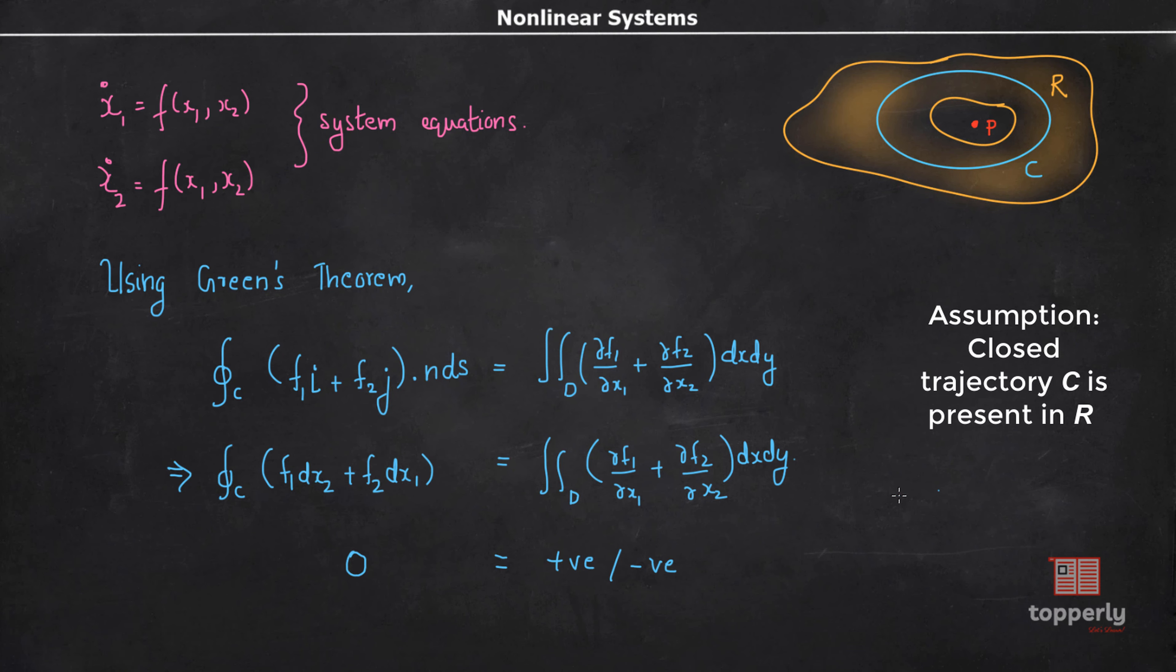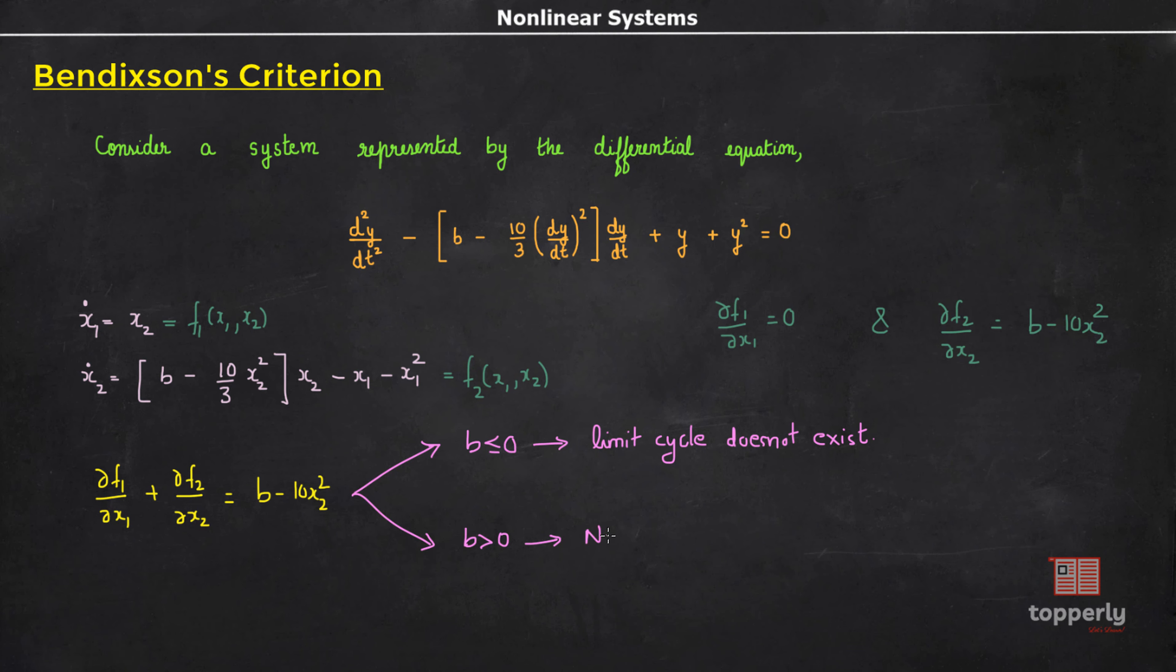So what if b is greater than zero? In that case, we can't conclude whether the expression has a fixed sign. So we can't say anything regarding limit cycle in this case. That is, no conclusion can be made.